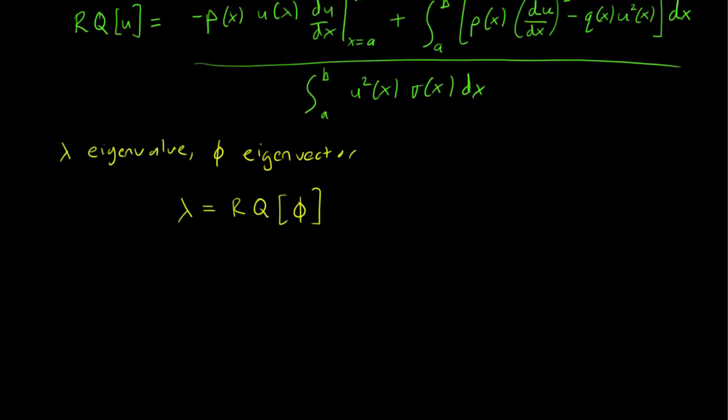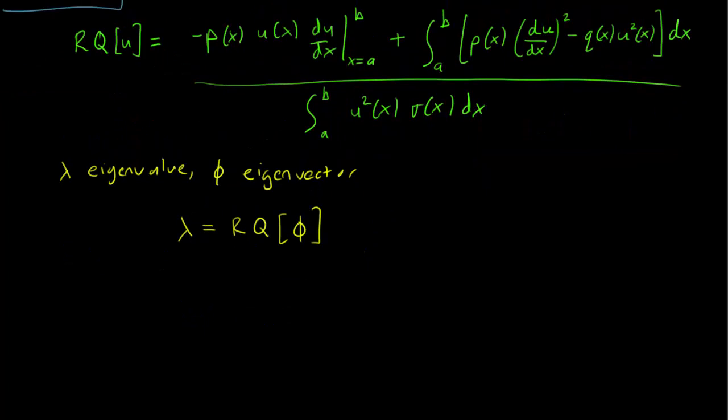And in this video we are going to talk about an application to the Rayleigh quotient in that it helps us to find the lowest eigenvalue. So let lambda 1 be the lowest eigenvalue. We have used this notation before.